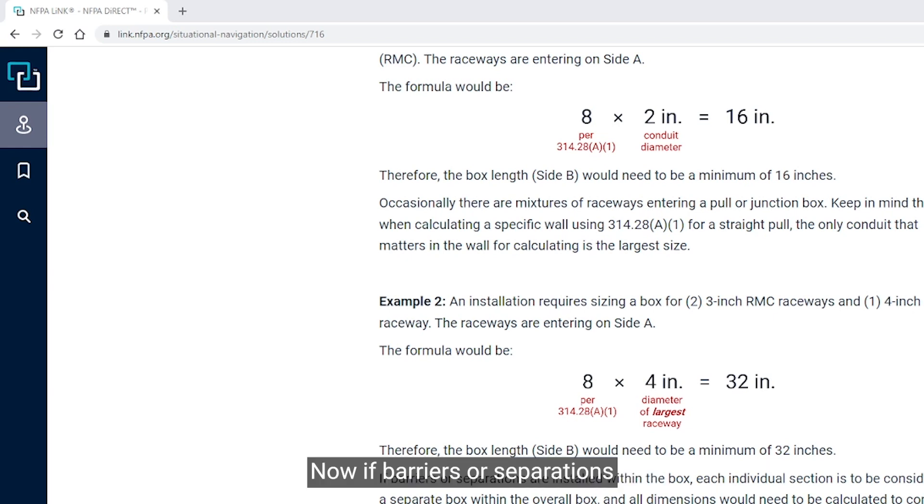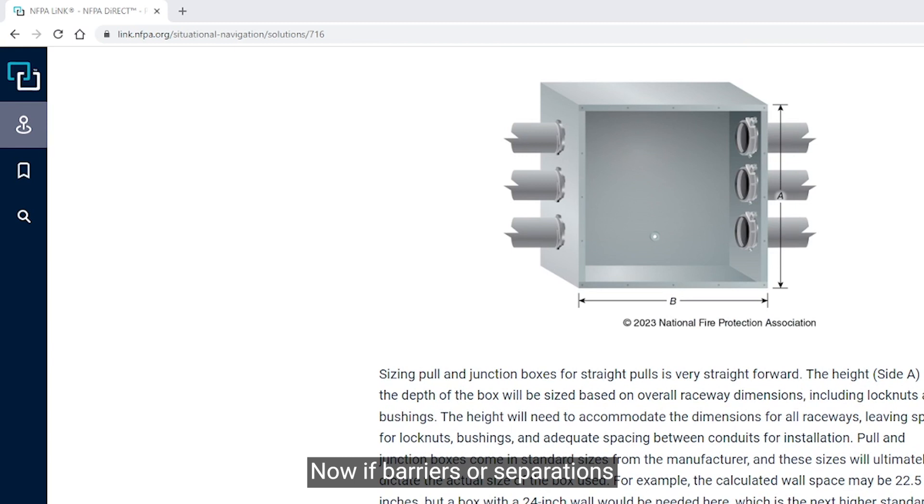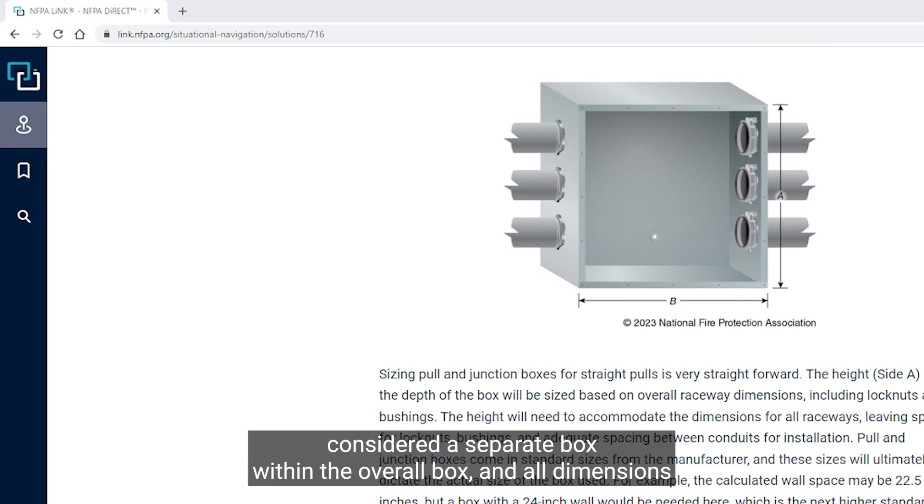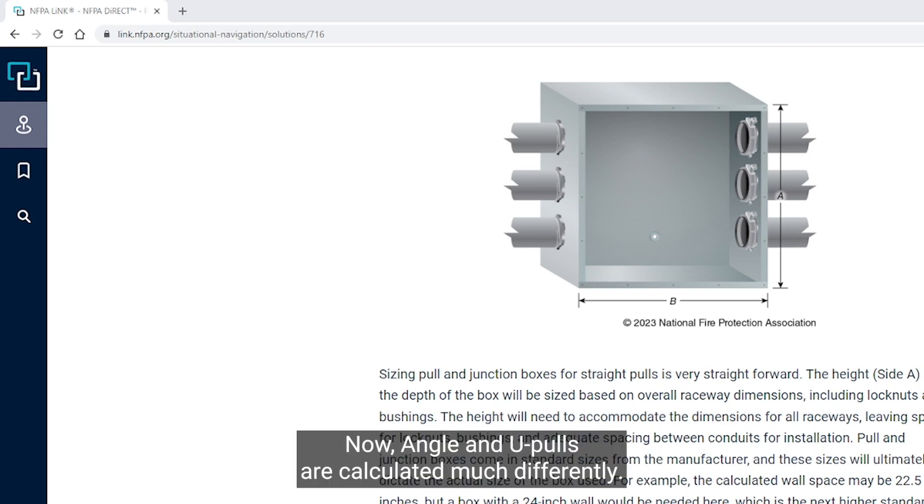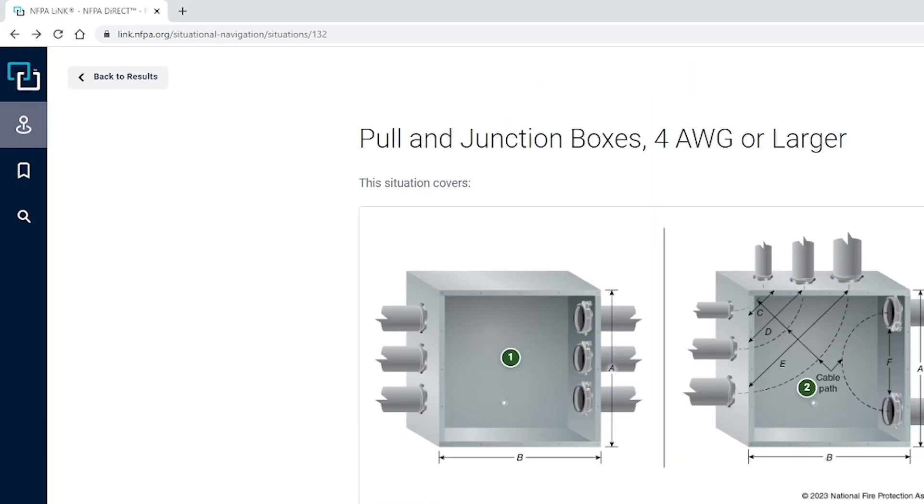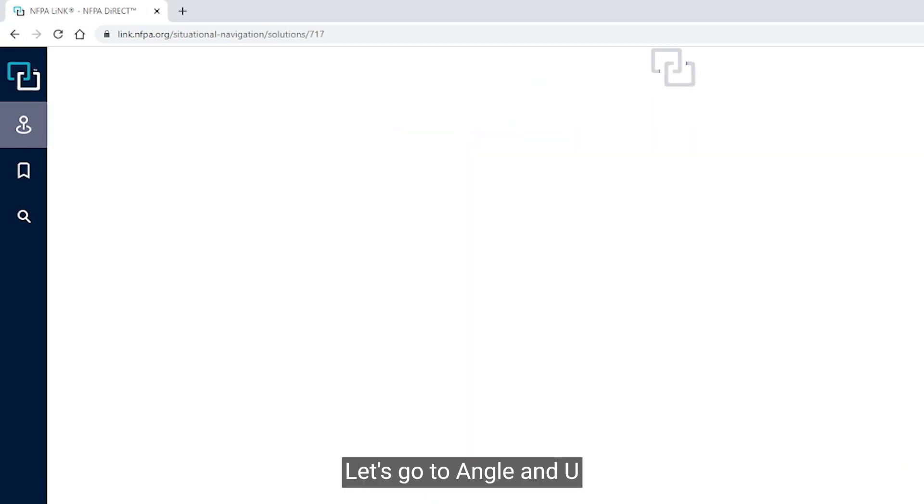Now, if barriers or separations are installed in any way, then those individual sections are to be considered a separate box within the overall box, and all dimensions would need to be calculated to comply with the NEC for each separate space. Angle and U pulls are calculated much differently. Let's go to angle and U, Read more.